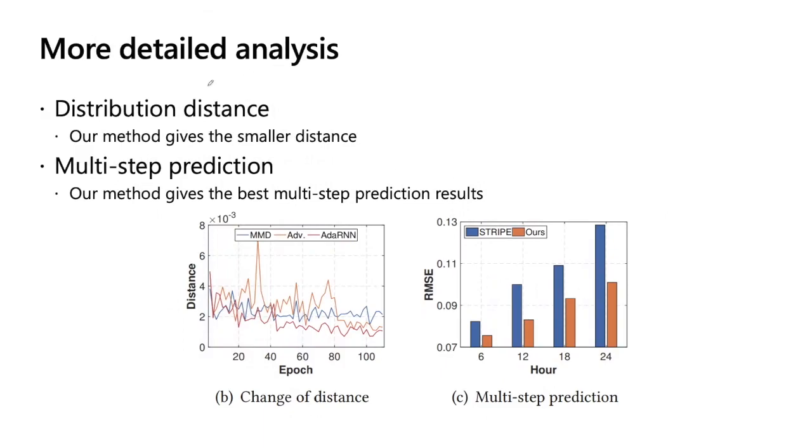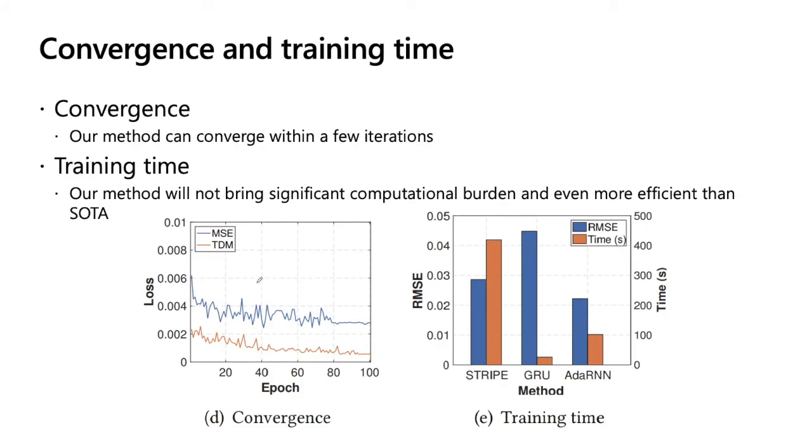We add some detailed analyses. For example, we can see that from this figure, our method gives the smaller distance, which means our method can fully reduce the distribution distance. And for example, in this one, we can see that our method gives the best multi-step prediction results. We also did some analyses for the convergence. We can see that our method can converge within a few iterations. For the training time, we can see that our method will not bring significant computational burden, and is even more efficient than the state-of-the-art method Stripe.